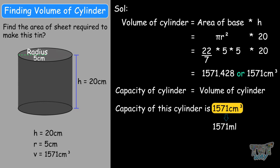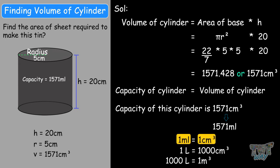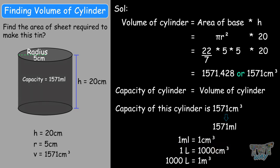We can also express capacity in milliliters, because 1 ml is equal to 1 centimeter cubed. So 1,571 centimeters cubed equals 1,571 milliliters. Also, 1 liter is equal to 1,000 centimeters cubed, and 1,000 liters is equal to 1 meter cubed. So when volume is 1 centimeter cubed, capacity is 1 ml; when volume is 1,000 centimeters cubed, capacity is 1 liter; and if volume is 1 meter cubed, capacity is 1,000 liters.